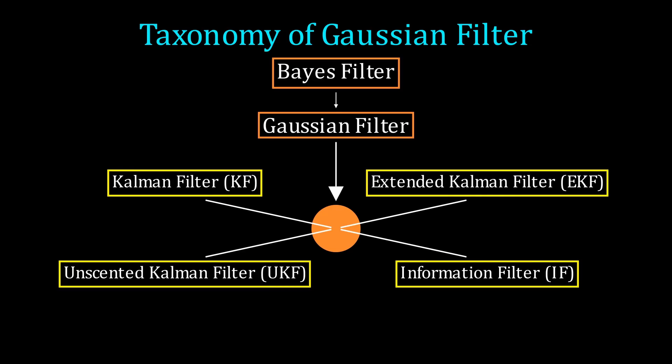The Bayes filter has an entire taxonomy of different filters based on what assumptions are made. The Gaussian filter is a renowned filter because it implements the probability distributions as Gaussians. There are four different Gaussian filters and we'll be starting with the simplest one called the Kalman filter today.